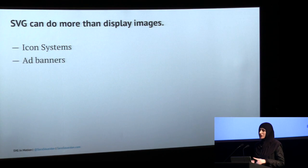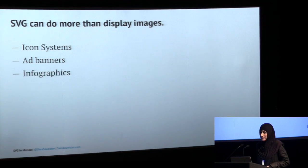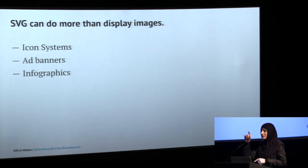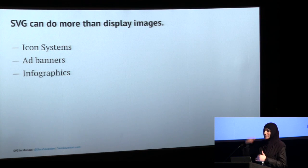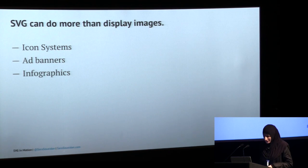SVG is great for ad banners. Flash is dying — it's blocked in Firefox and Chrome, and there was talk from Facebook calling people to kill Flash. HTML5 and SVG are the perfect alternative. SVG is also perfect for infographics. Infographics are usually images with text inside that can't be selected, searched, or made accessible. But with SVG, the text inside an infographic is searchable, selectable, and accessible — it's 100% real text.